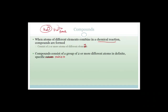You can see that it's very important that we have the correct ratio of atoms to make the specific molecule we're going for. If I want to talk about water, I need to know that there are two hydrogens for every one oxygen. Compounds may also be broken down into simpler substances by chemical means.